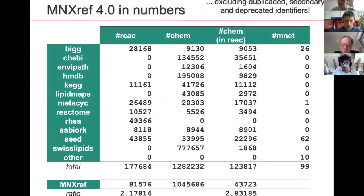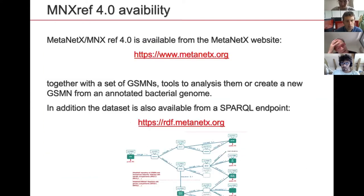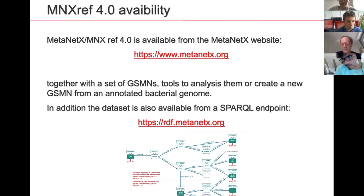A few numbers on the current status of the resource: on the left you can see the different databases incorporated and the relatively large number of chemicals appearing in at least one reaction that have been reconciled. The database is available from our website together with a couple of tools, and we also provide an RDF version accessible from our SPARQL endpoint. Thank you.